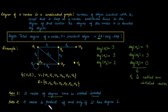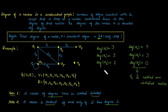A vertex is called a pendant or appendant if and only if its degree is one. In this example, the degree of vertex v3 is one, so we call v3 a pendant vertex.